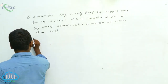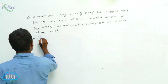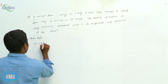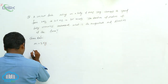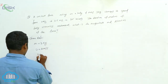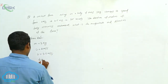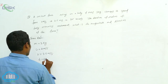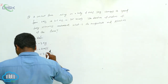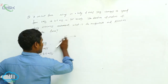Given: m is equal to three kilograms, u is equal to two meters per second, v is equal to three point five meters per second, and t is equal to twenty-five seconds. The formula suitable here is F equals m times a, according to Newton's second law.